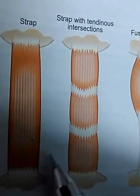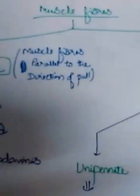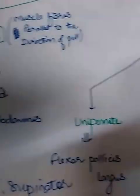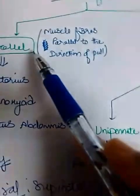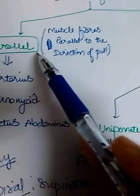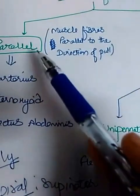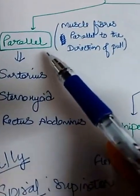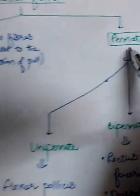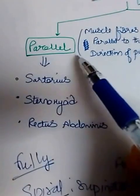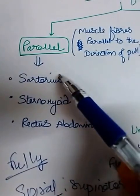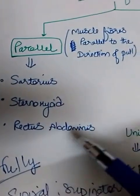Parallel muscle fibers can be flat, short, quadrilateral, or strap-shaped. Dividing muscle fibers into two main types apart from spiral and cruciate: parallel fibers, where the muscle fibers are parallel to the direction of pull, and pennate fibers, where they are oblique to the direction of pull.